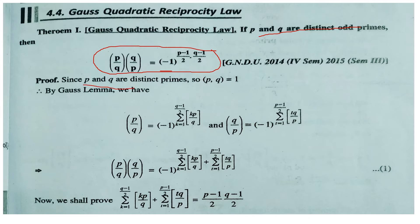We are given that p and q are two distinct primes, so gcd(p,q) = 1. By Gauss's lemma, the Legendre symbol (p/q) can be written as (-1) raised to the power of the summation from k=1 to (q−1)/2 of the floor function ⌊kp/q⌋. Similarly, the Legendre symbol (q/p) equals (-1) raised to the power of the summation from t=1 to (p−1)/2 of ⌊tq/p⌋. If you don't know Gauss's lemma, please watch my previous video.